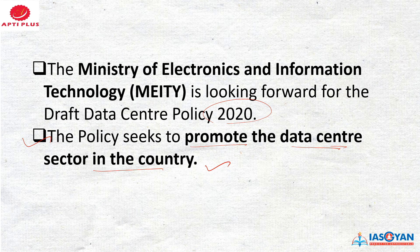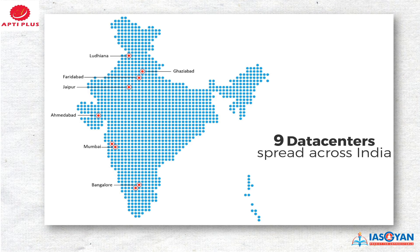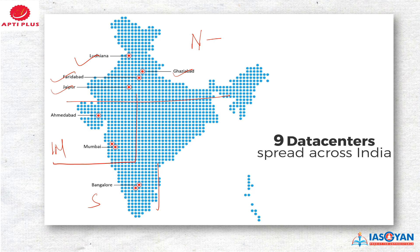Talking about the data centers spread across India, this map helps you understand how many data centers exist in India. Bifurcating by region: in North India we have Ludhiana, Ghaziabad, Faridabad, and Jaipur — four data centers. In West India we have Ahmedabad and Mumbai — two centers. In Southern India there are two centers at Bangalore. So these are the total data centers presently spread across India.